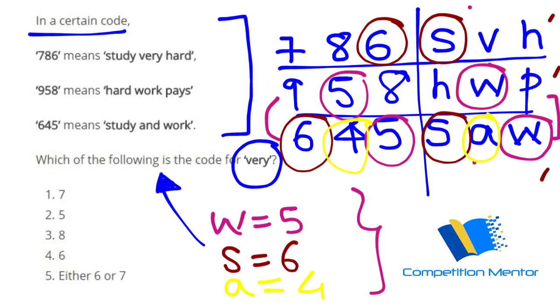And there is VH. And what is the next common? H, right? H. So what is the common from top two? 8 and 8. So H equals to 8. And now these two you can leave because V equals to 7 and P equals to 9. That you don't need.